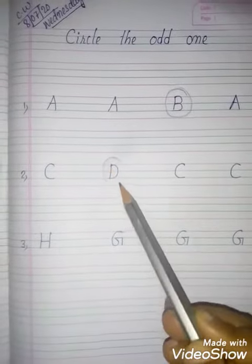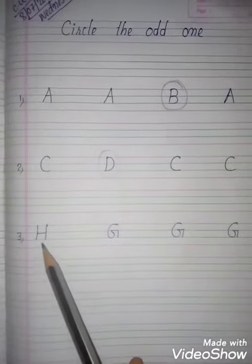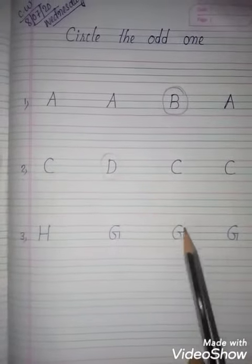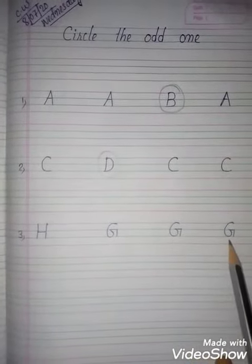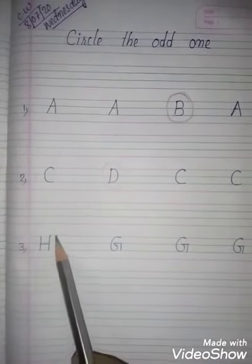H for hen, G for girl, G for girl, G for girl. Which one is different? H for hen. What you will do? You will circle it.